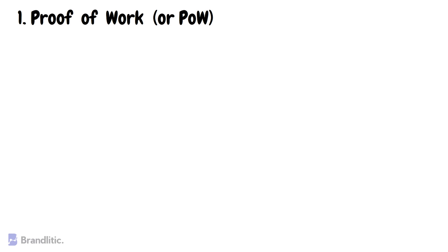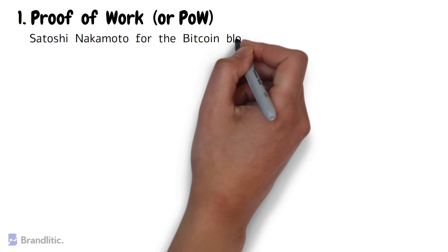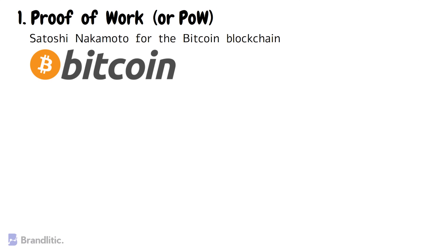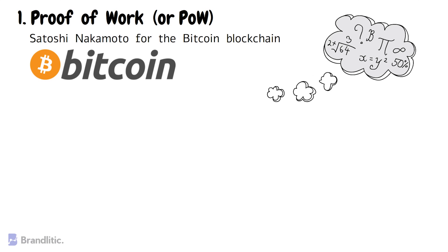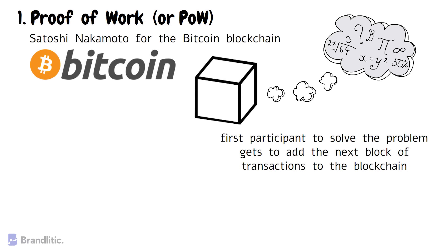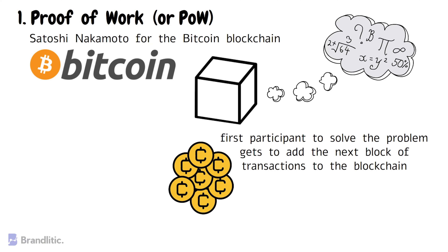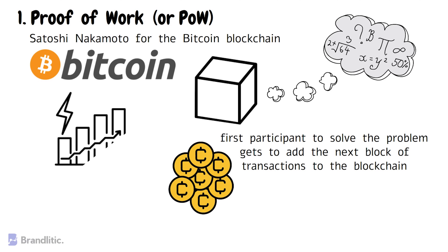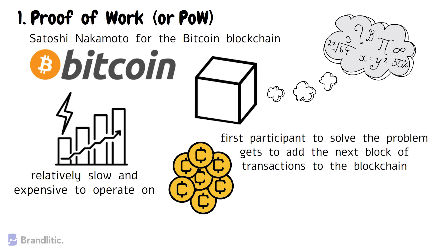Proof of Work is the original blockchain consensus algorithm created by Satoshi Nakamoto for the Bitcoin blockchain. It works by requiring network participants to solve a complex mathematical problem, which takes a significant amount of computational power. The first participant to solve the problem gets to add the next block of transactions to the blockchain and is rewarded with a predetermined amount of cryptocurrency. This algorithm requires large computational power and energy consumption, which makes it relatively slow and expensive to operate.